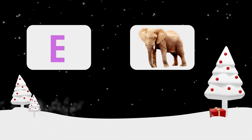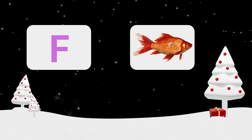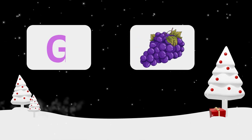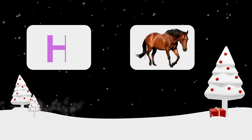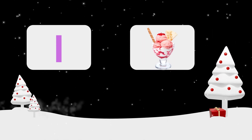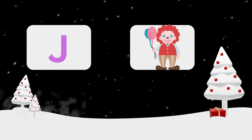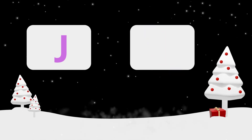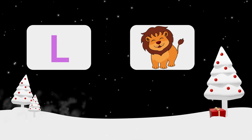E for Elephant, F for Feast, G for Crab, H for Horse, I for Ice Cream, J for Joker, K for Kite, L for Lion.